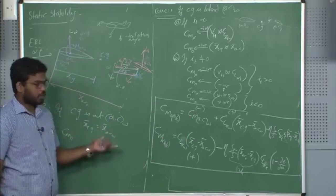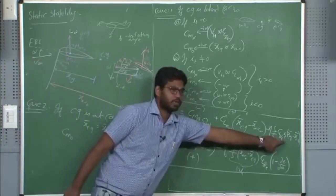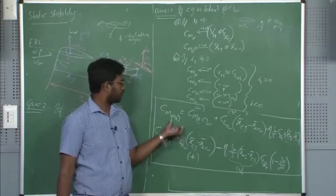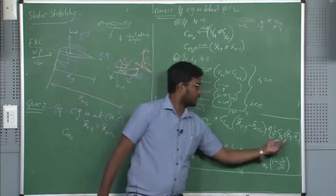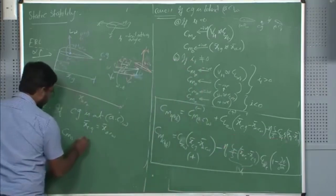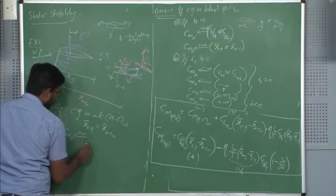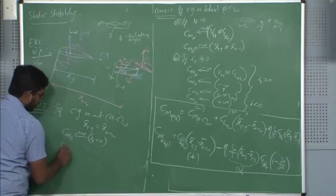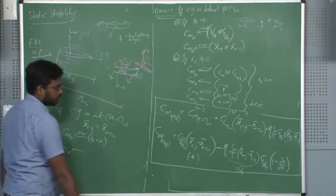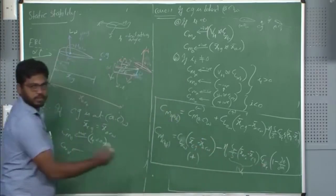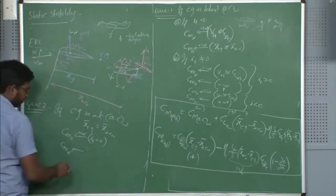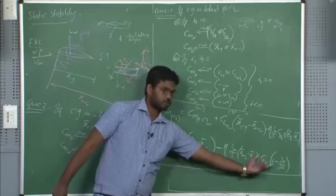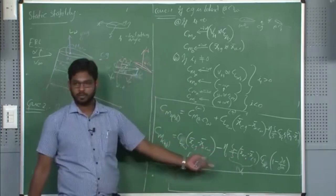For a non-zero i_t: if i_t is positive, CM_0 again becomes negative. The only condition where CM_0 becomes positive is when i_t is negative. CM_alpha in this case will always be negative as long as you have a tail, because the CG-minus-AC-of-wing difference term is 0, making CM_alpha automatically negative — a positive quantity multiplied makes it negative.